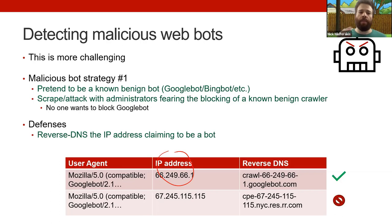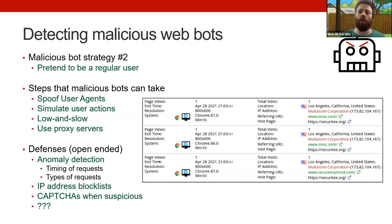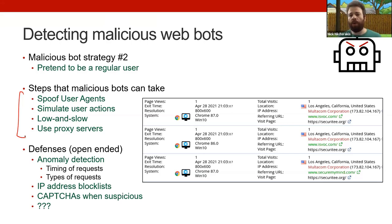The second strategy is more complicated — a malicious bot pretending to be a regular user, claiming to be the latest version of Firefox or Brave. Attackers have several client-side tools available: they can spoof user agents, simulate user actions by scrolling, tapping, and clicking, go low and slow without hammering your server, and use proxy servers to appear to come from expected locations — like buying residential proxy access to appear as a typical ISP user even while operating from the public cloud.